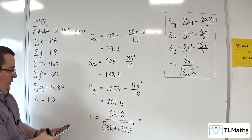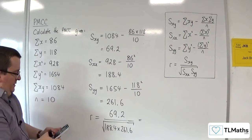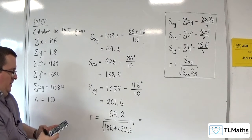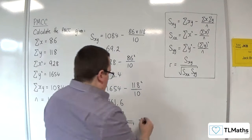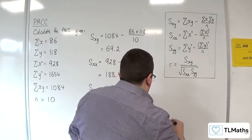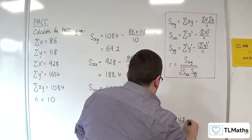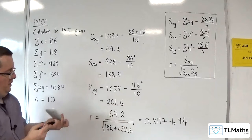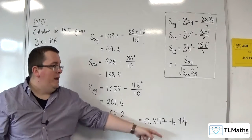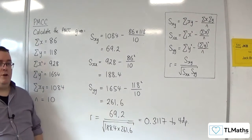So we've got 69.2 divided by the square root of 188.4 times 261.6, and that gets us 0.3117 to four decimal places. That's a relatively weak positive correlation.